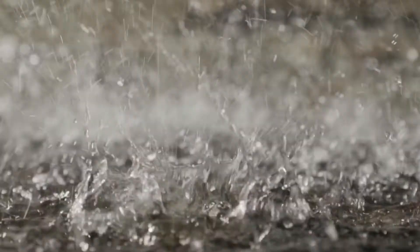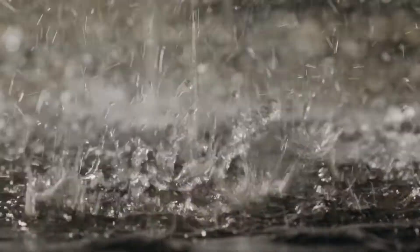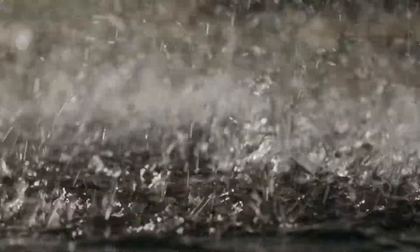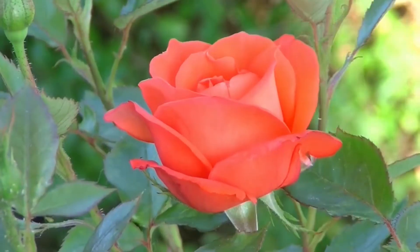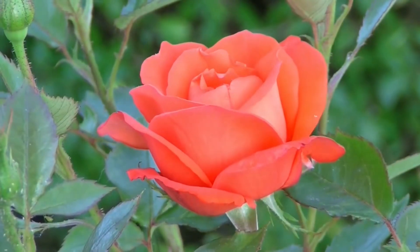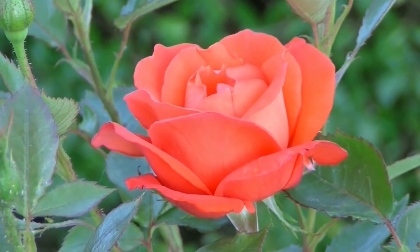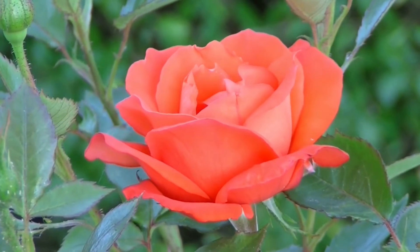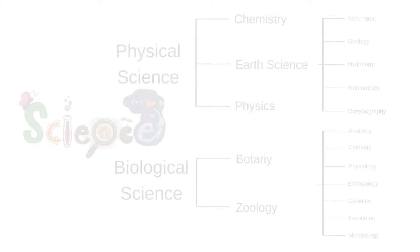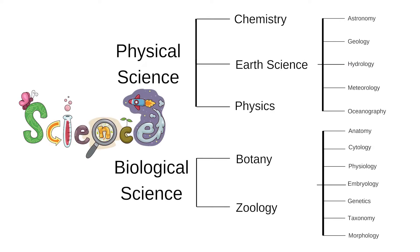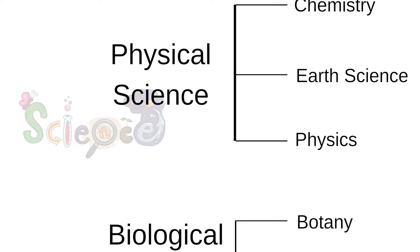The main purpose of doing science is to explain everyday phenomena and derive models of reality. Science can be divided into two broad divisions: the physical sciences and the biological sciences.